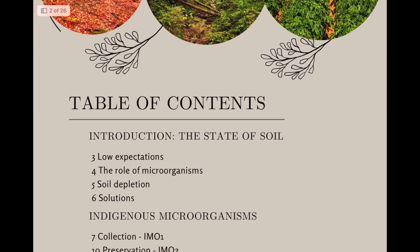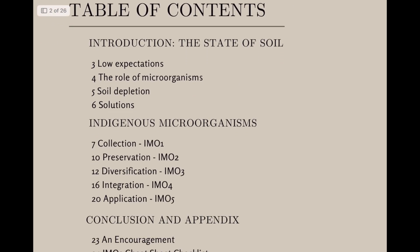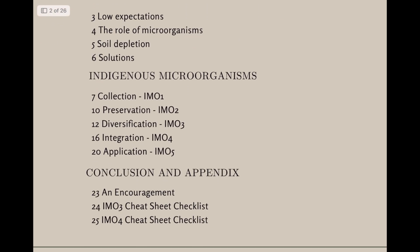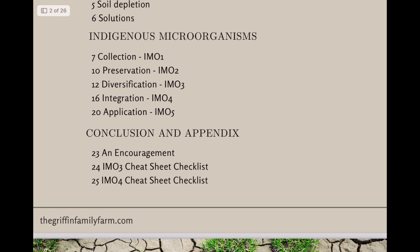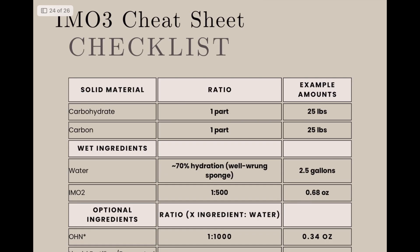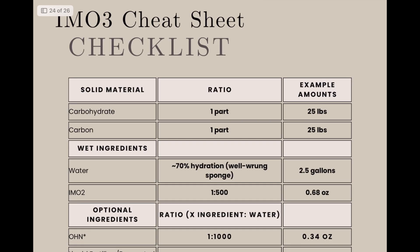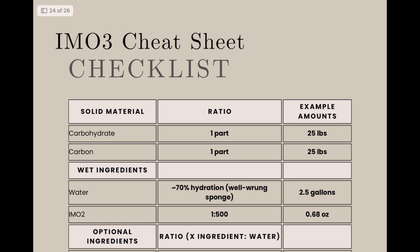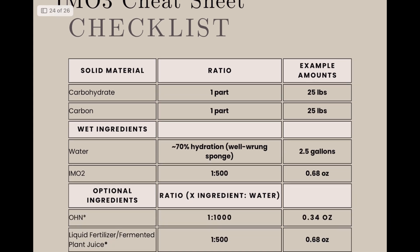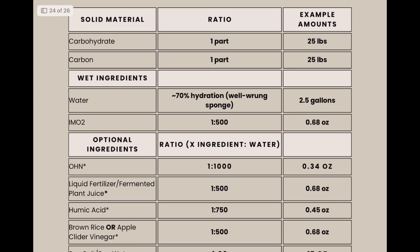If you want to download our free ebook on IMO cultivation stages one through five, we have explanations of everything as well as recipe cheat sheets for IMO 3 and 4, so if that would be helpful please hit the link in the description to get access to that.